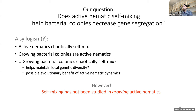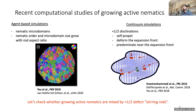Our question is: does active nematic self-mixing help these bacterial colonies decrease this undesirable gene segregation? If growing bacterial colonies are active nematics that chaotically self-mix, they should maintain genetic diversity. It turns out growing active nematics are different in some subtle ways, and self-mixing hadn't been studied in them yet. There have been some really interesting simulations, including from Luca Giomi, and some continuum simulations suggesting that plus-half defect self-propulsion continues to be an important process for the growing active nematic.